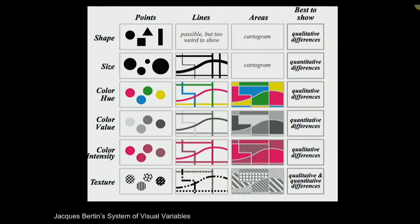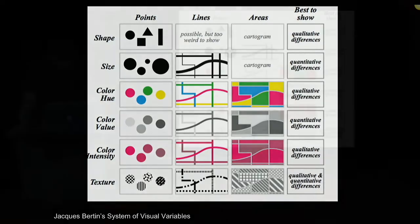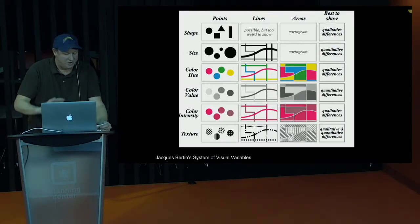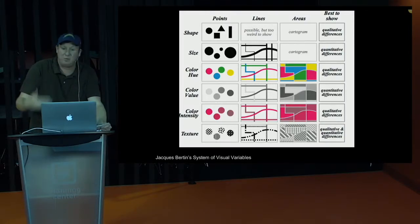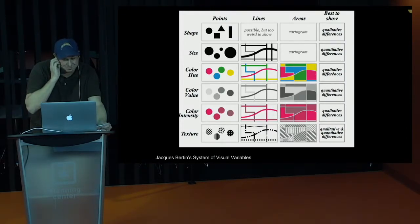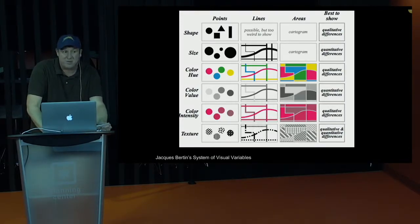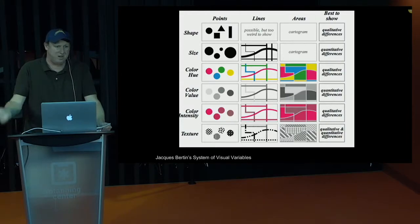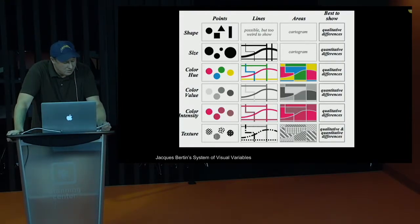This is Jacques Bertin's System of Visual Variables — a categorization of all the visual variables you can use in your visualization. Color is often misused. Color hue — like red, black, and blue — should be used for qualitative differences. The same goes for color intensity and shape. If you have different shapes in a graph, they're not going to communicate quantitative data; they're for categories like cars, trucks, planes.